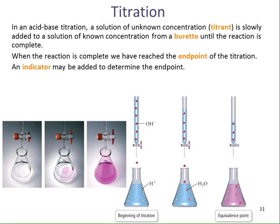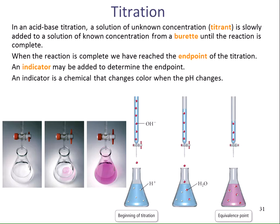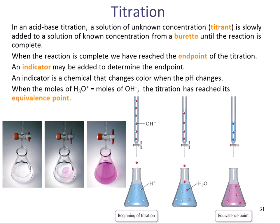We know when to stop the titration because we typically place an indicator in the solution. An indicator is a chemical that changes color when the pH changes. When the number of moles of the hydronium ion equal the moles of the hydroxide ion, the titration has reached its equivalence. The equivalence point means that the hydronium ion concentration and the hydroxide concentration are the same. The end point is when we stop the titration based on the indicator, and the equivalence point is when the moles of hydroxide equal the moles of the hydronium ion. Ideally, the equivalence point and the end point should come at the same time.